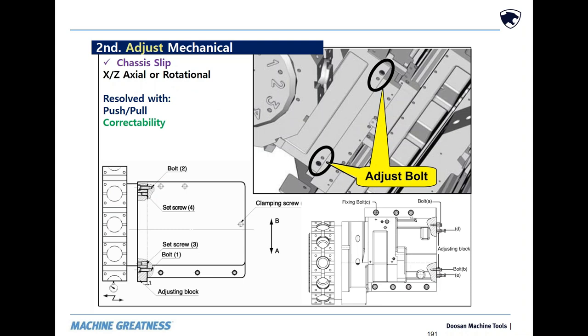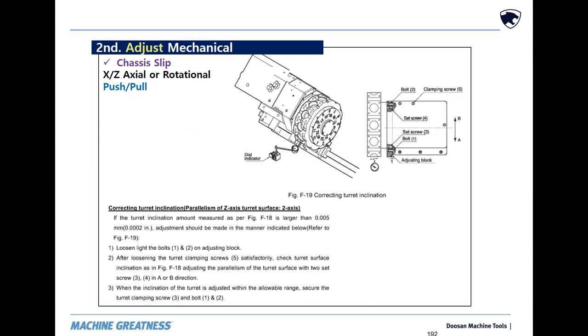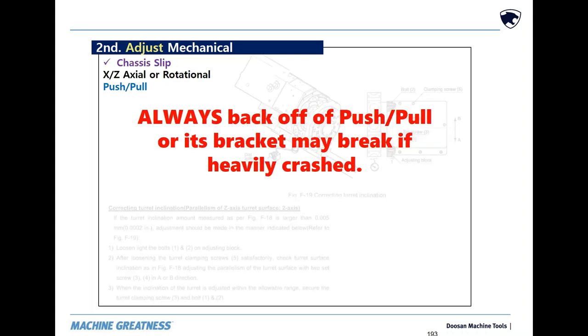The second method uses push-pull bolts. They have more individual adjustability, but it also requires more time. Do not forget to index your turret 180 degrees when checking the z-axis to see if the bearing will ride true. Always back off the push-pull bracket as it is under tension and could break during a crash.